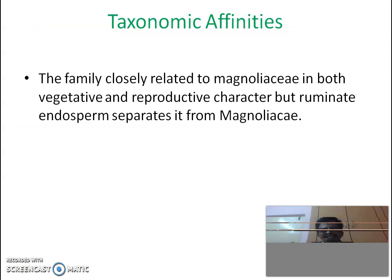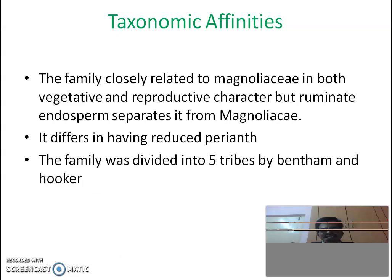Regarding taxonomic affinities: this family is closely related to the Magnoliaceae family. It shows similarity in vegetative and reproductive characteristics, except for the presence of ruminate endosperm in the seeds. It also differs in having a reduced perianth. The family was divided into five types by Bentham and Hooker.